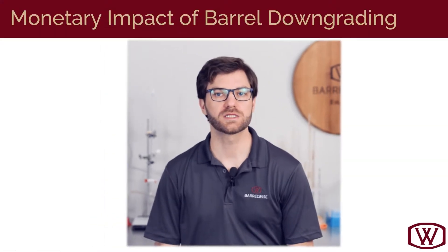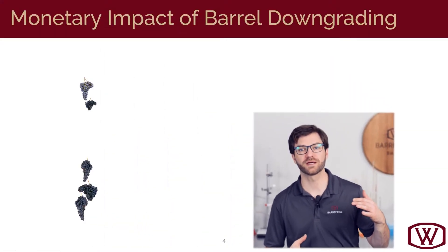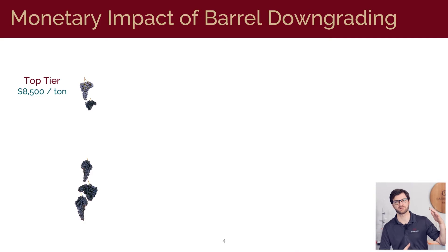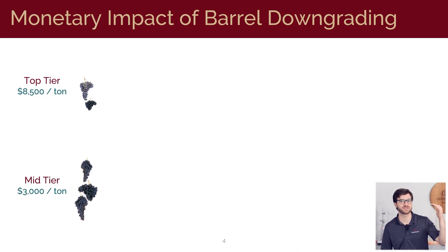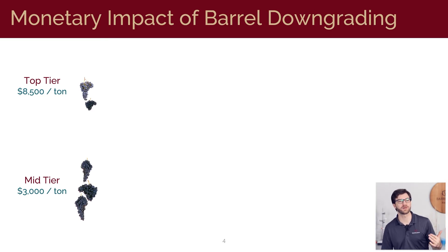First off, let's talk about why we care about managing free sulfur in a barrel program by looking at how quality variations across a barrel aged wine program can have a monetary impact. We have fruit coming in that's ranging in quality and price — maybe we spend $8,500 a ton on fruit for our top tier wines and $3,000 a ton for fruit coming in for our mid-tier program.